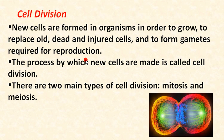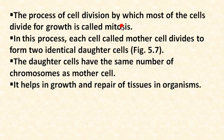There are two main types of cell division: mitosis and meiosis. The process of cell division by which most cells divide for growth is called mitosis. Most cells in our body divide by mitosis for the growth of the organism. The key term to remember for mitosis is growth.